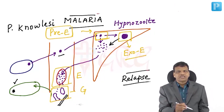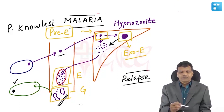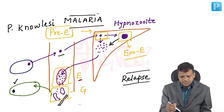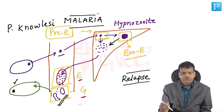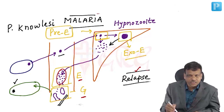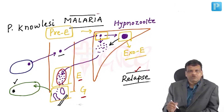Understanding what killing each stage achieves: the erythrocytic stage causes symptoms, so killing it treats symptoms. The gametocytic stage causes transmission, so killing it prevents transmission. The exo-erythrocytic stage is responsible for relapse, so killing it prevents relapse. The pre-erythrocytic stage is the first stage and the cause of malaria, so killing it prevents the cause of malaria.